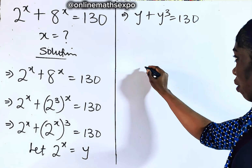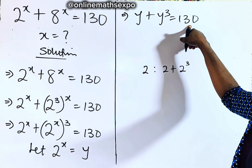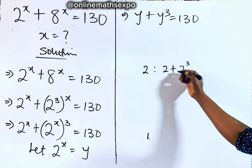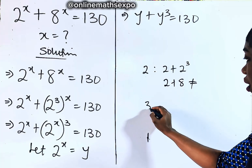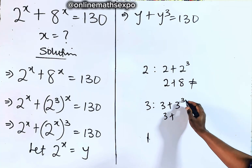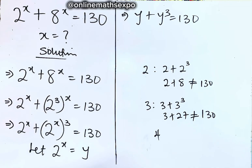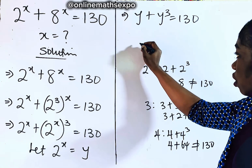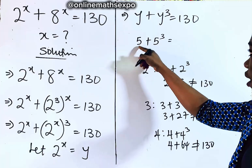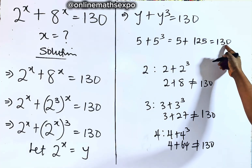Let's go by trial and error, using factors of 130. Try 2: 2 plus 2 cubed = 2 + 8 = 10 — not close to 130. Try 3: 3 plus 27 = 30 — not equal to 130. Try 4: 4 plus 64 = 68 — not equal to 130. Try 5: 5 plus 5 cubed = 5 + 125 = 130. Yes! That number is 5.